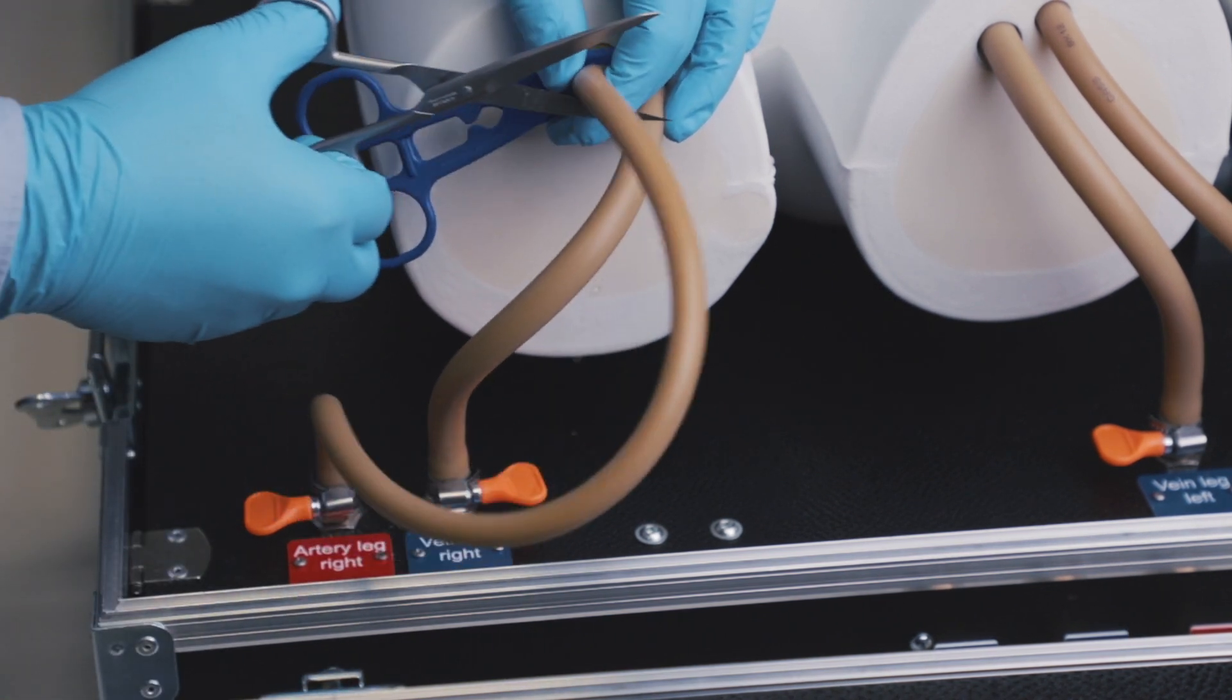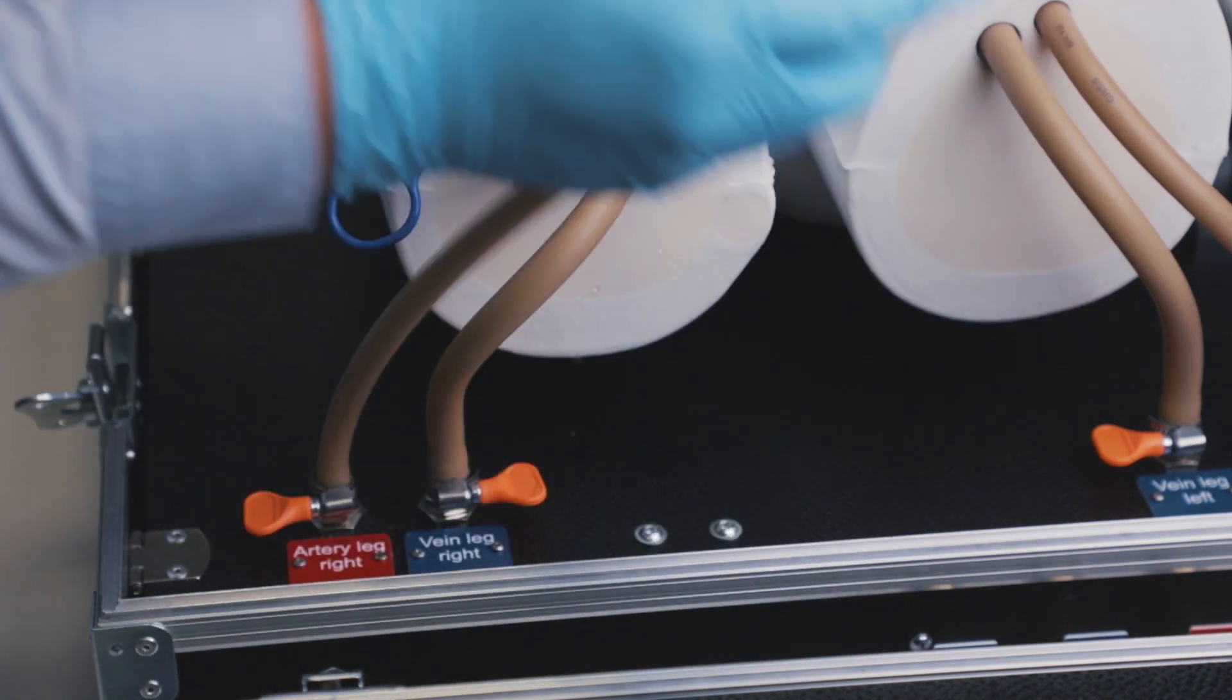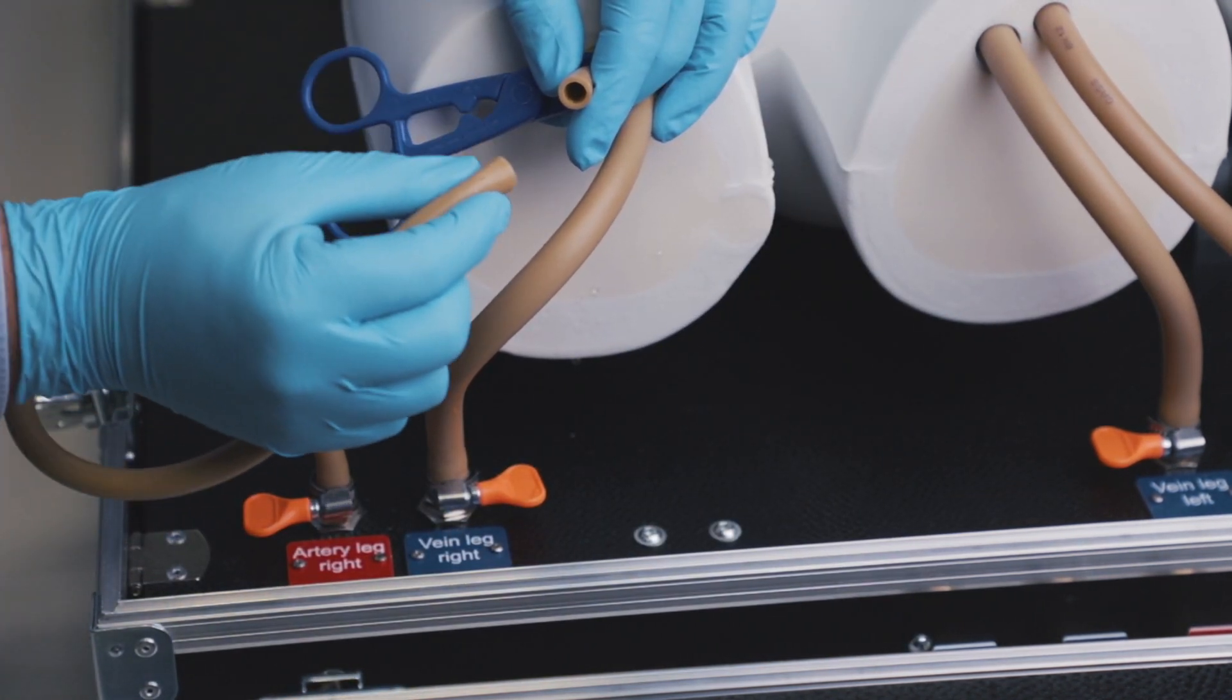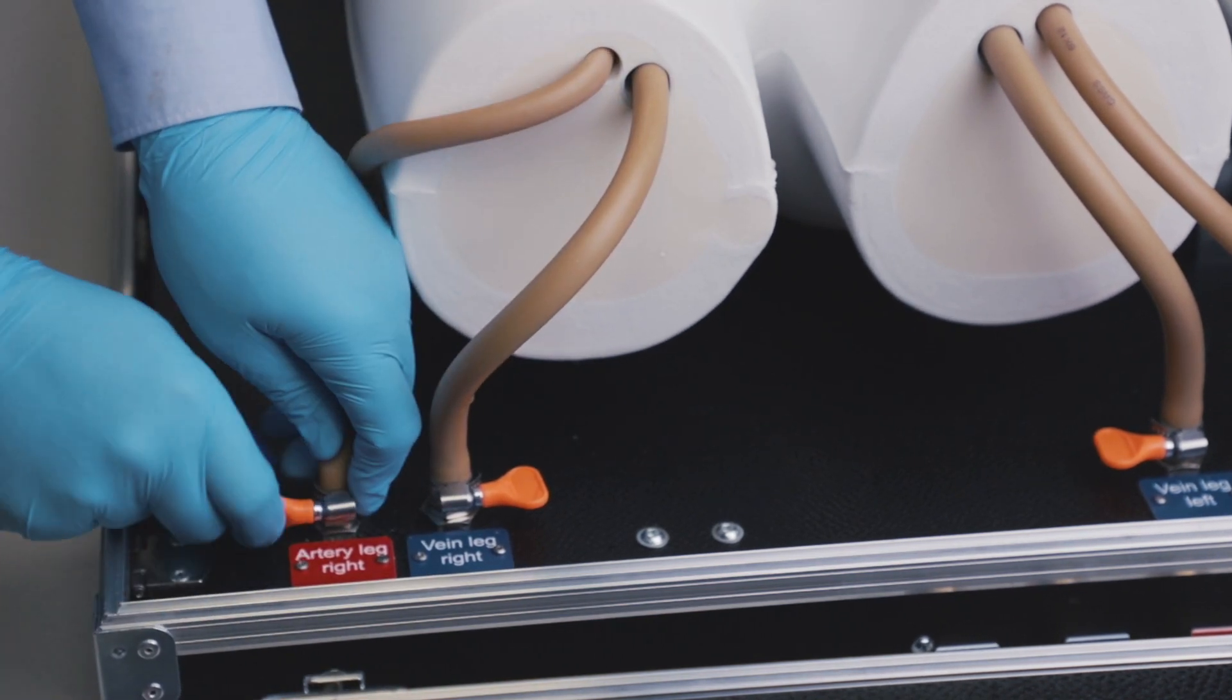After each puncture, the tube is pulled out and cut off to remove the big puncture hole that is produced during the training process. The tube can be pulled out about 10 times until it needs to be replaced.